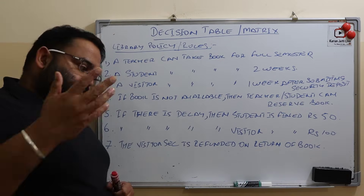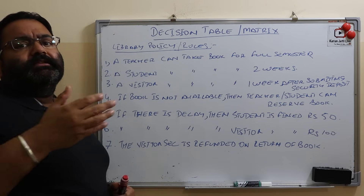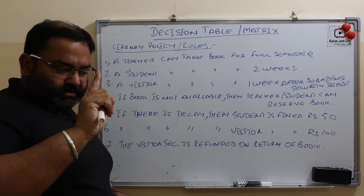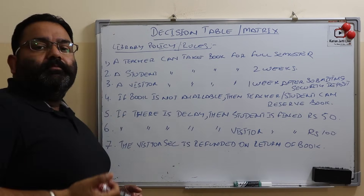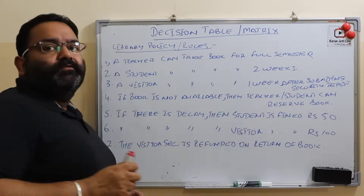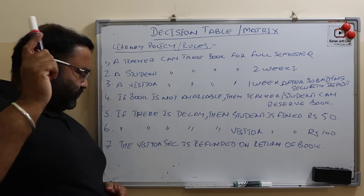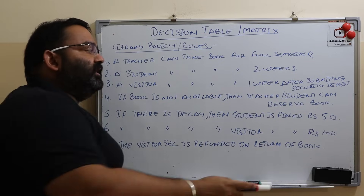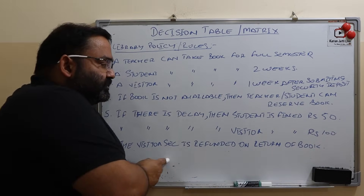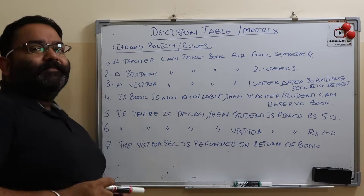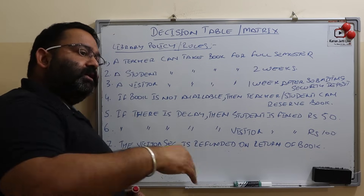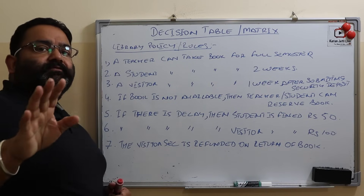If a book is not available, a teacher or student can reserve the book — meaning they will be notified when it becomes available. This is only for teacher and student; a visitor cannot reserve a book. When returning a book, if there is a delay, a student is fined 50 rupees and a visitor is fined 100 rupees. When the visitor returns the book, their security deposit is refunded. If there is a delay, they are fined and then refunded; if no delay, simply the book is taken back and the security deposit is refunded.